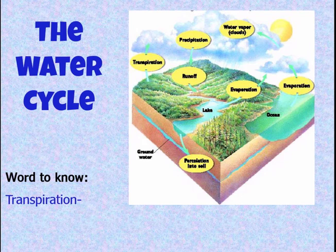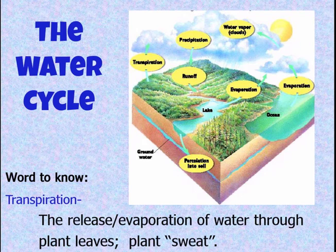One word students are often not familiar with is transpiration — the release or evaporation of water through plant leaves, sometimes called plant sweat. We don't really appreciate how much water is released into the environment, but tropical rainforests have so many plants and such thick vegetation that they're actually producing their own weather patterns. It rains a lot in tropical rainforests because plants are producing so much water.